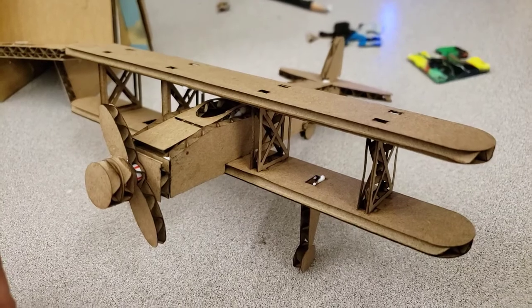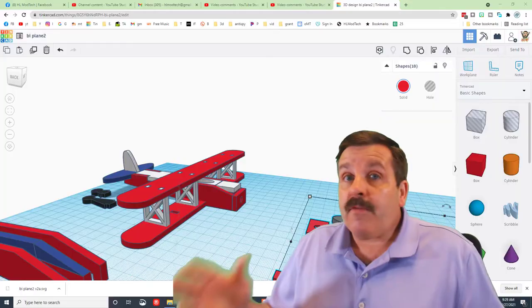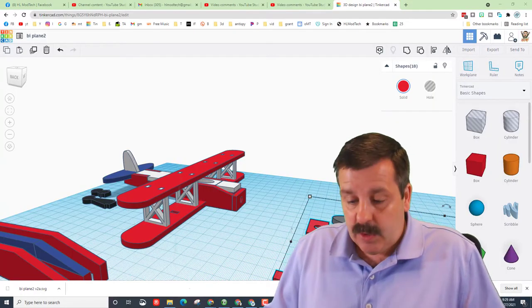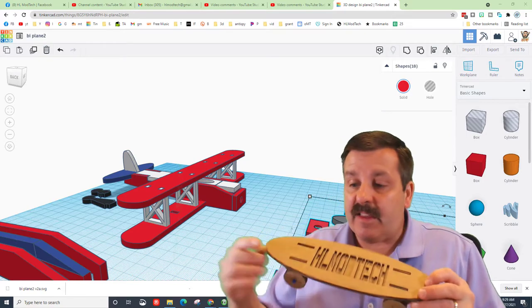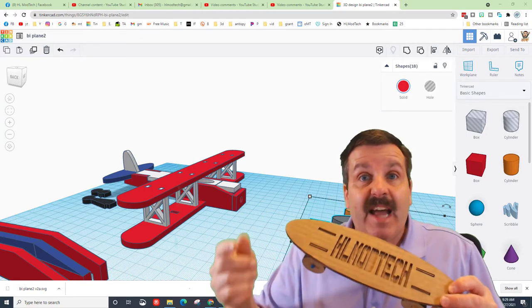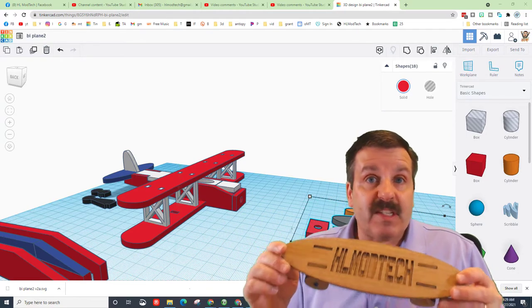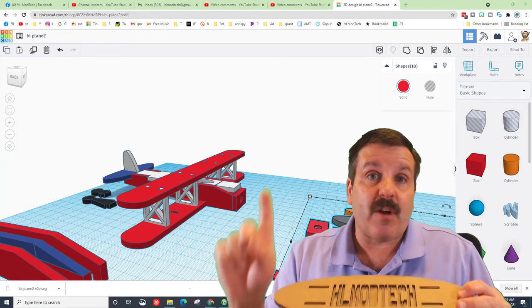And there you have it, an awesome little biplane. Friends, if this is your first time ever seeing one of these, I've got a lot of lessons like this where we learn how to design with notches and tabs. This cool skateboard is a great one to start with, and I'll make sure I have a link up in the cards if you're interested in trying to build it.